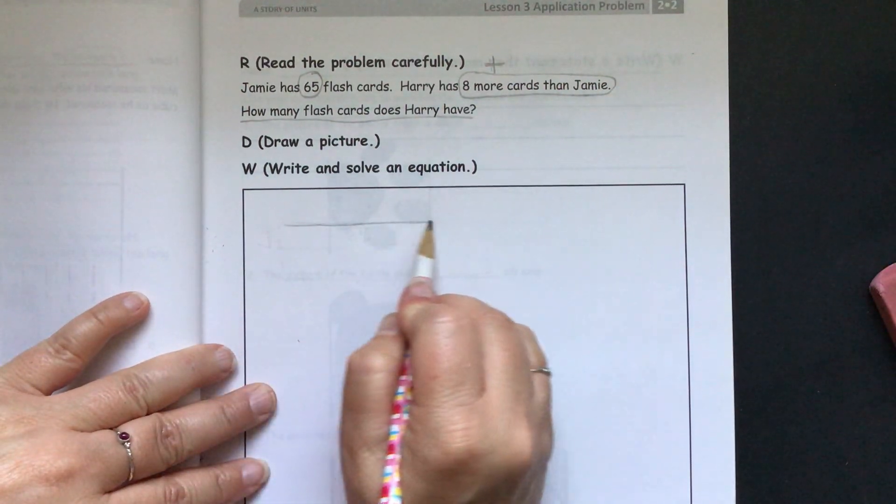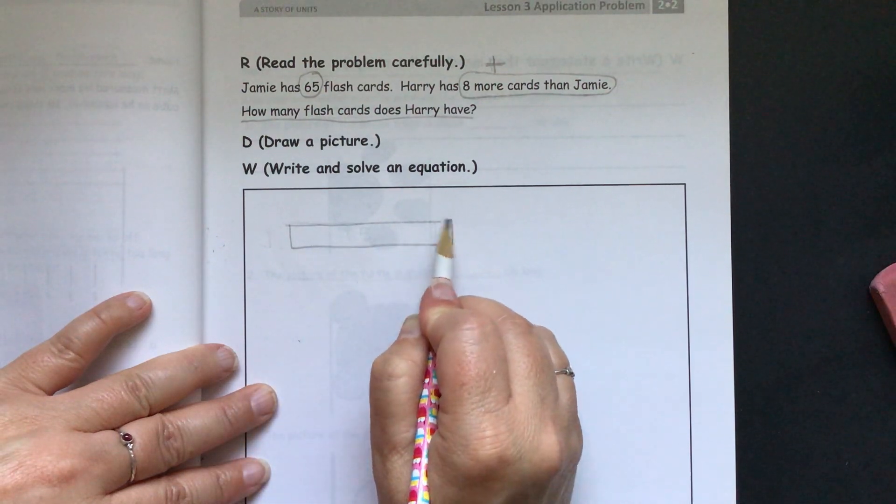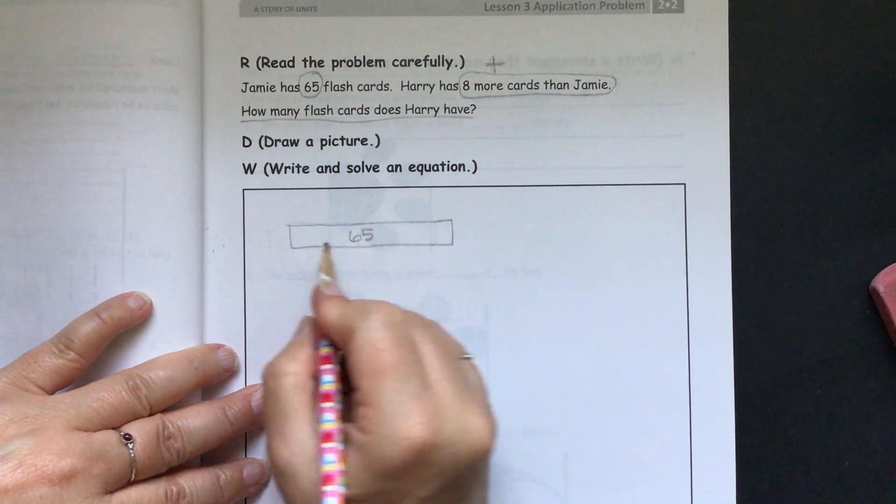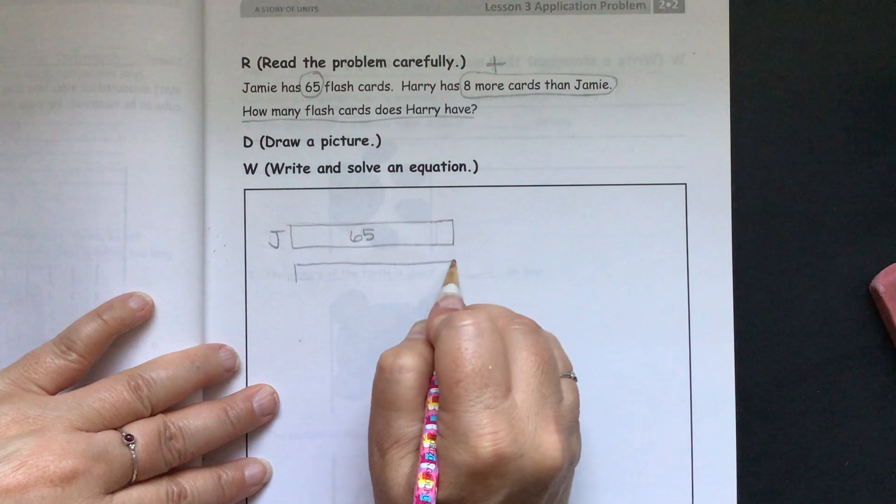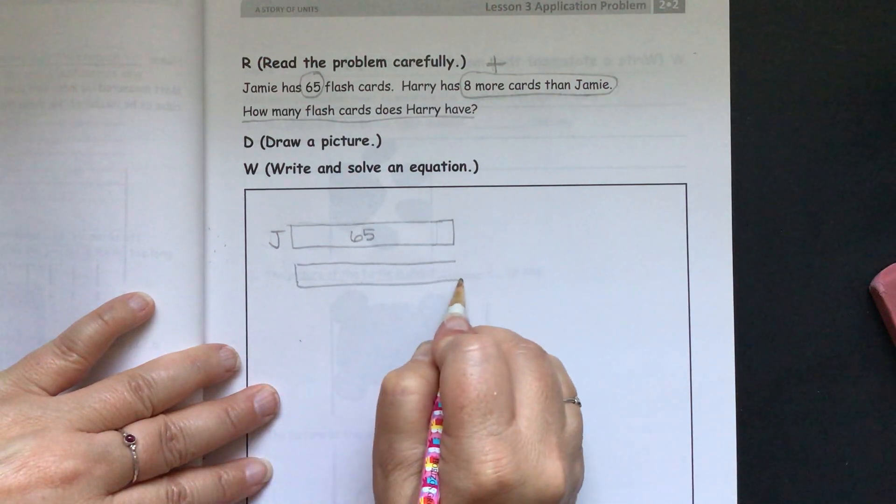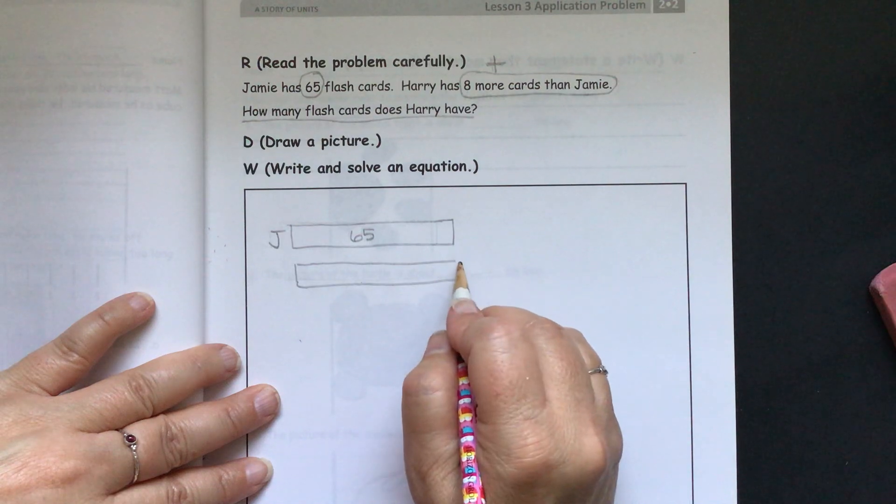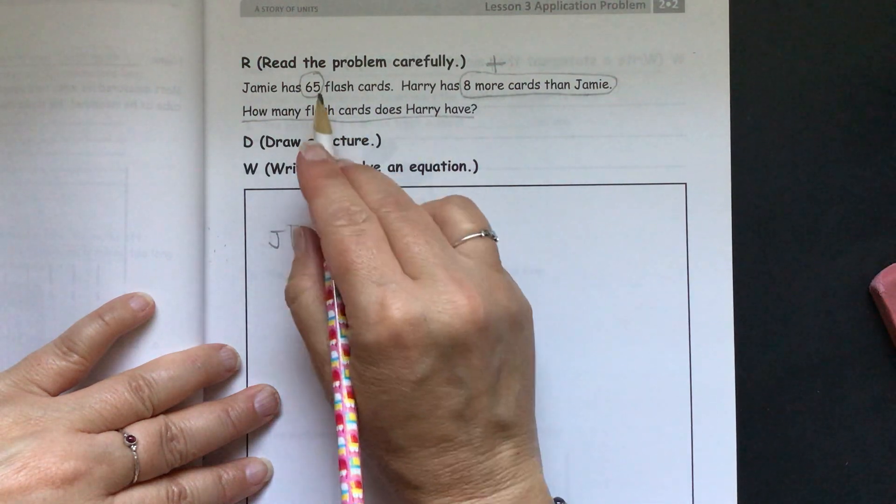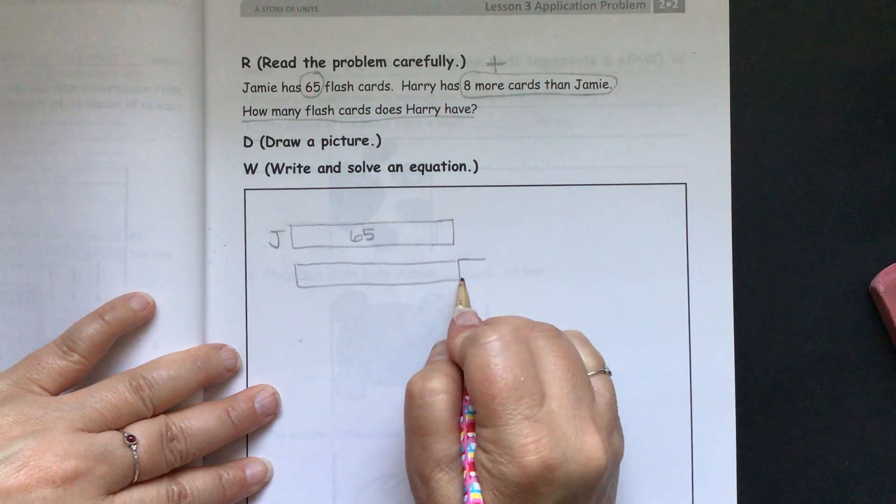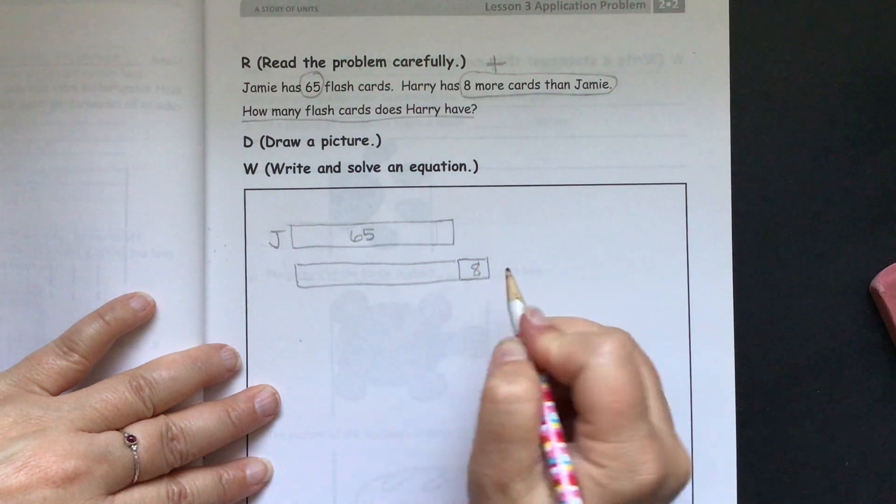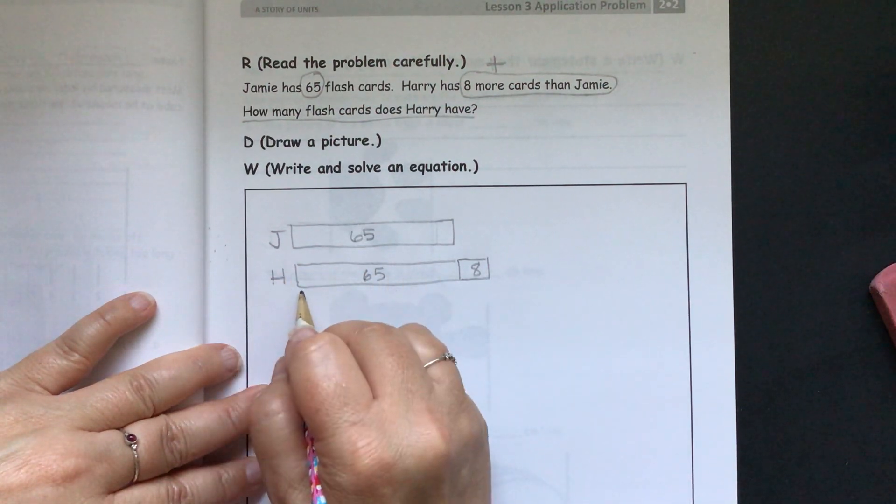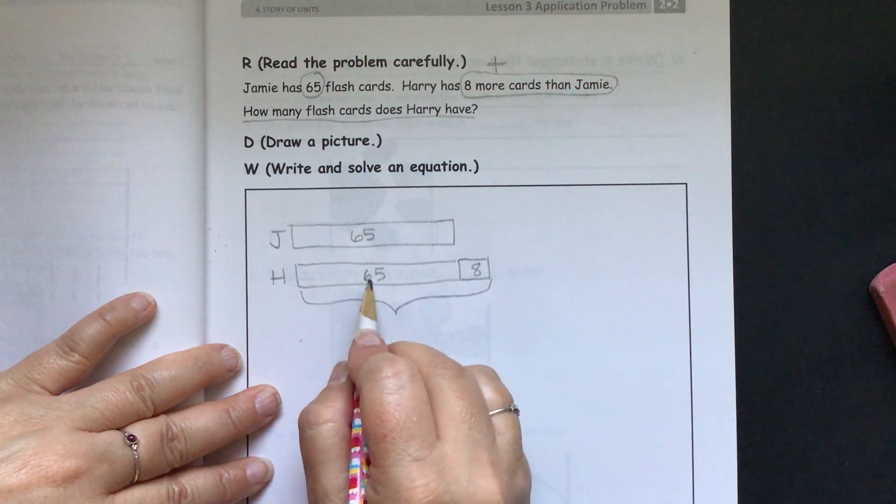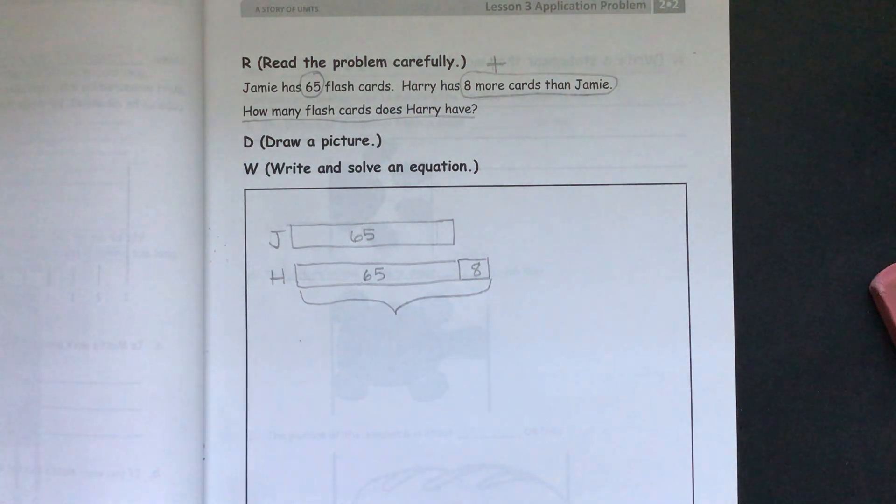Let's start with our tape diagram. Here we have 65 flashcards for Jamie. And then we know Harry has 8 more than Jamie. So this is 65, like Jamie has, but he has 8 more. So we'll put that 8 here, and 65 here, and Harry. We need to find out what this together is going to equal.